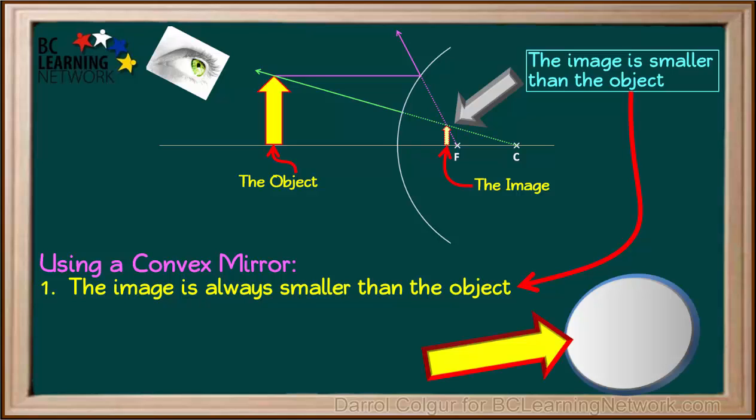Many vehicle side mirrors are convex mirrors. Because images in these mirrors are smaller than the actual objects, they look like they are farther away than they really are. So for that reason, many vehicle side mirrors have the warning, objects in the mirror are closer than they appear, printed on the surface.